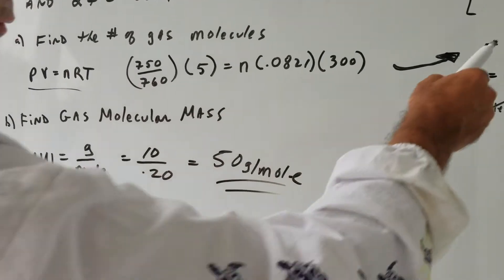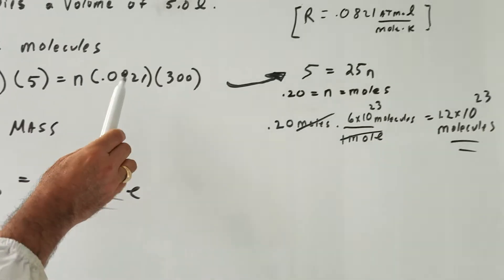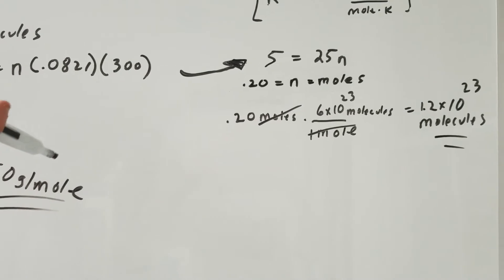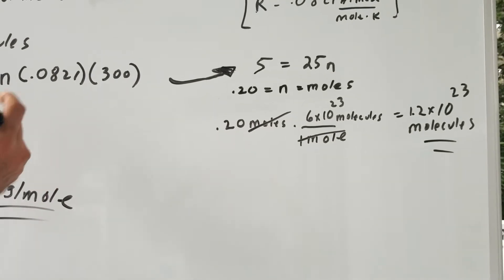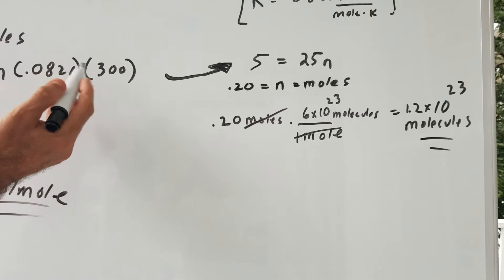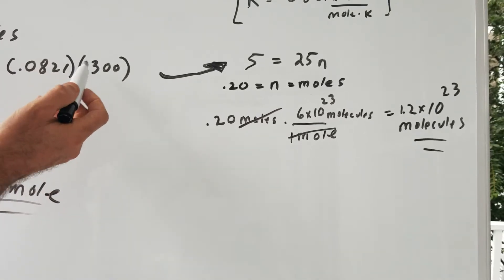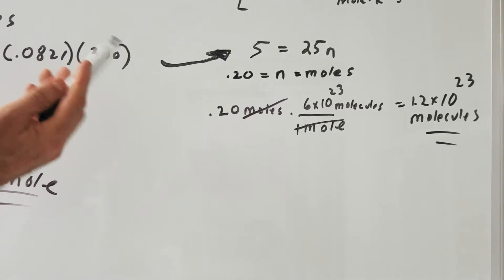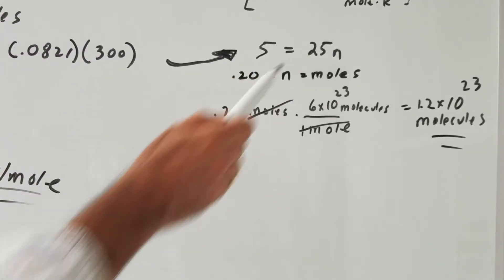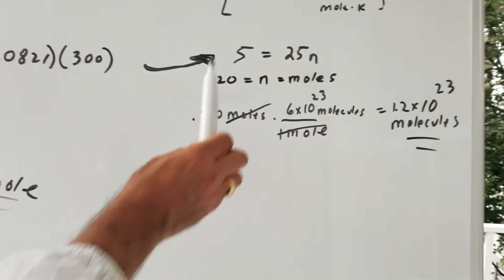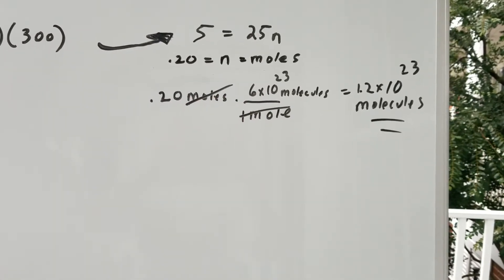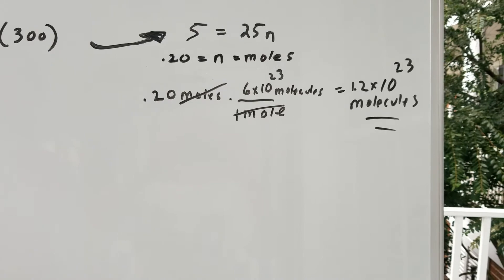So you're going to get a 5 here. Now, how would I evaluate 0.0821 times 300? What if it was 100 times 0.0821? You would have moved the decimal over two places and you would have got 8.0. So times it by 3 because it's 300. That would have gave you 24.6, which is approximately equal to 25. 5 divided by 25 gives you 0.20 for n. And that's the number of moles.